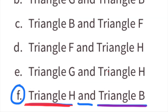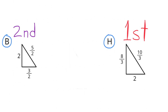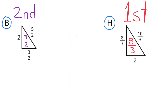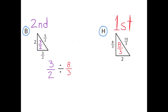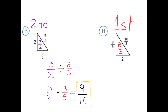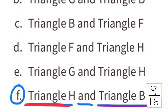Part F: triangle H and triangle B. On the right is triangle H, mentioned first, and on the left is triangle B, mentioned second. The area for triangle H is 8 thirds square units and the area for triangle B is 3 halves square units, or 1.5 square units. We're figuring out how much larger the area of triangle B is compared to triangle H. 3 halves divided by 8 thirds is the same as multiplying 3 halves times 3 eighths, which equals 9 sixteenths. The area of triangle B is 9 sixteenths the size of the area of triangle H.